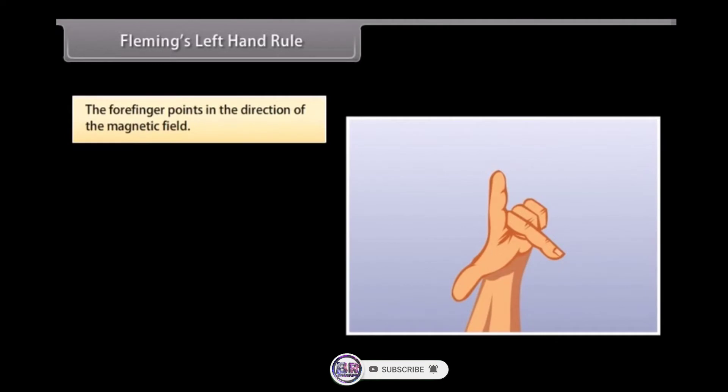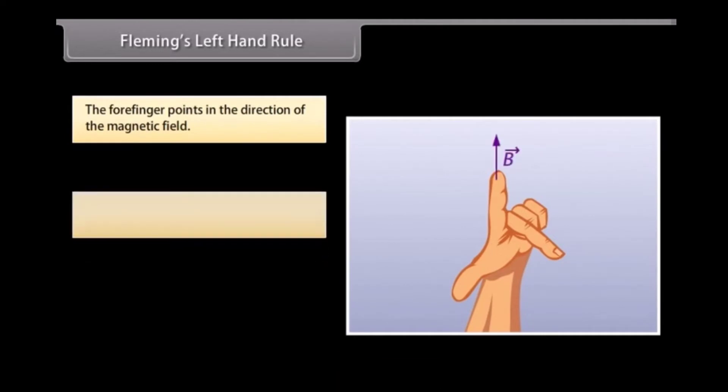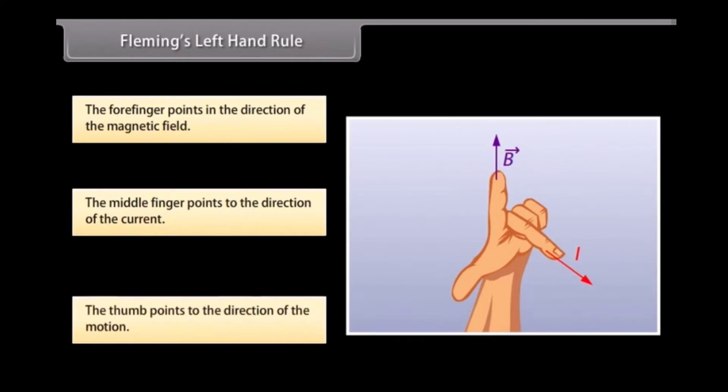Fleming's Left-Hand Rule is mnemonic to represent three directions. You need to stretch your thumb, forefinger and middle finger of your left hand. Each finger points to a specific direction. The forefinger points in the direction of the magnetic field. The middle finger points to the direction of the current. The thumb points to the direction of the motion. This is Fleming's Left-Hand Rule. Examples include woofers, subwoofers, electrical actuators, etc.